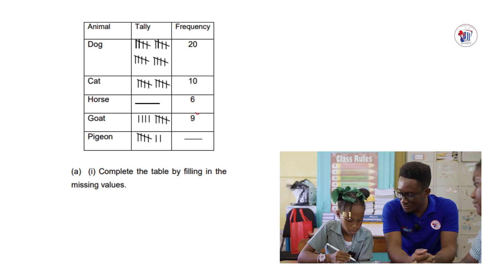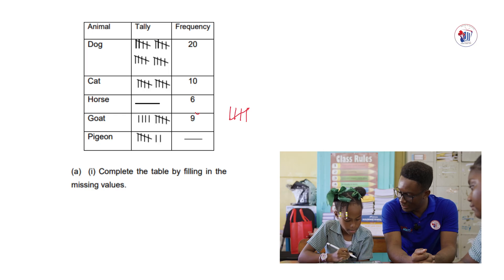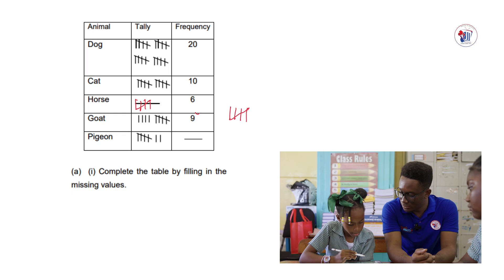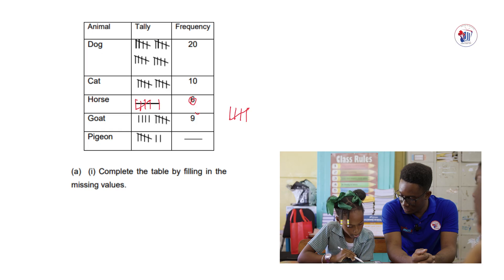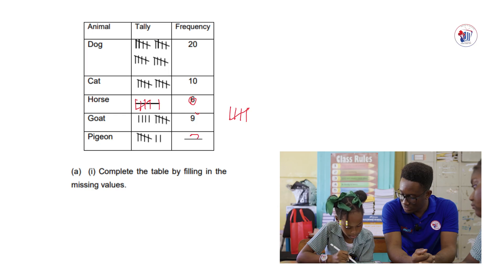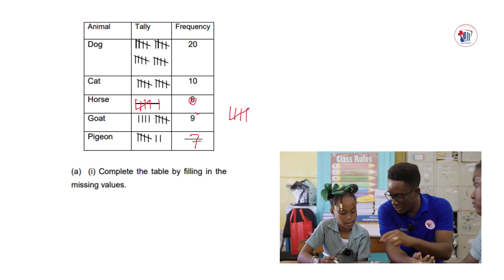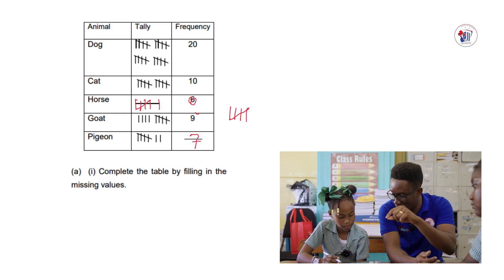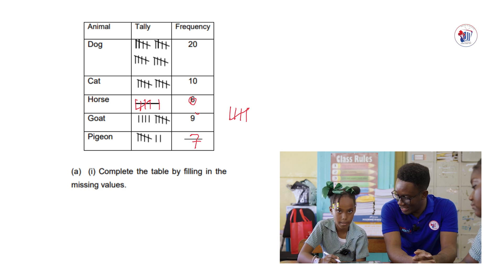So for 6: you start by writing the tally 1, 2, 3, 4, and then cross, which makes 5. And 1 more makes 6. So the 6 goes here. Now pigeon: 1, 2, 3, 4, 5, 6, 7 — and this makes 7. The stroke across means 5, and you add on to make 7.